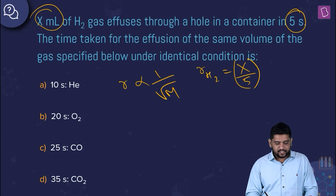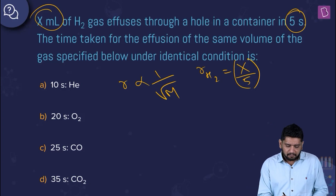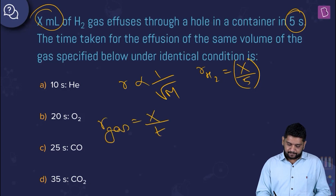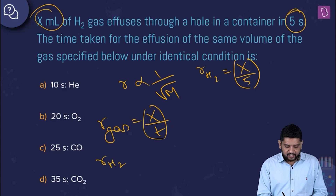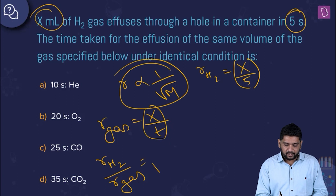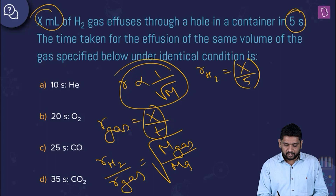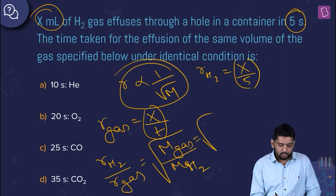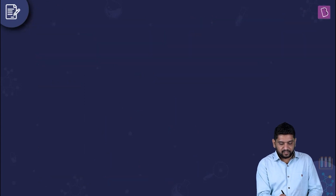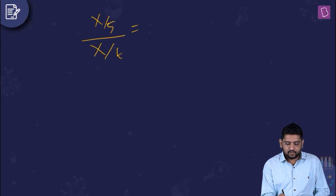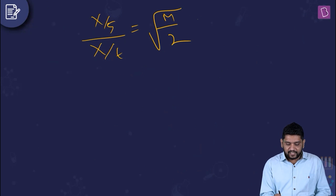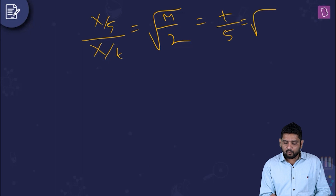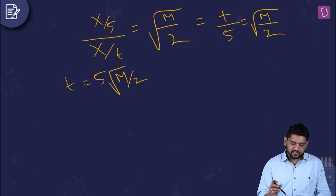For the other gas, if it takes time t to diffuse x mL, its rate is x/t. Using Graham's law: rate of H₂ divided by rate of gas equals √(M_gas / M_H₂) = √(M/2). Substituting: (x/5) / (x/t) = √(M/2), which simplifies to t/5 = √(M/2), so t = 5√(M/2).